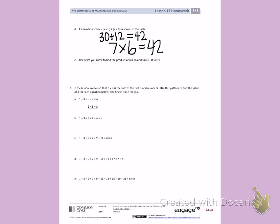Letter E. Use what you know to find the product of 4 times 16, or 8 4s plus 8 4s. So I'm going to find 8 4s, which is another way of saying 8 times 4, plus 8 times 4.